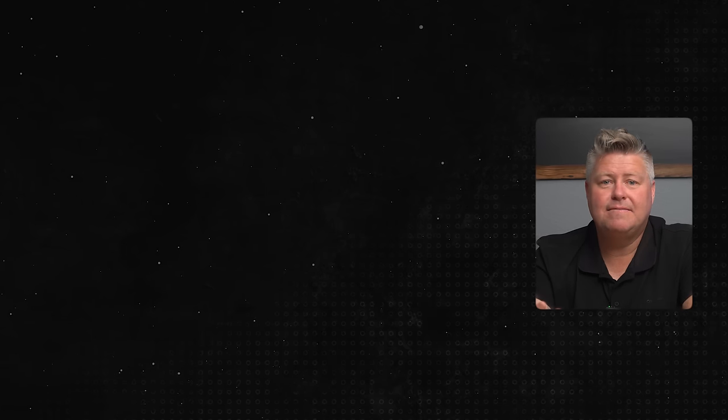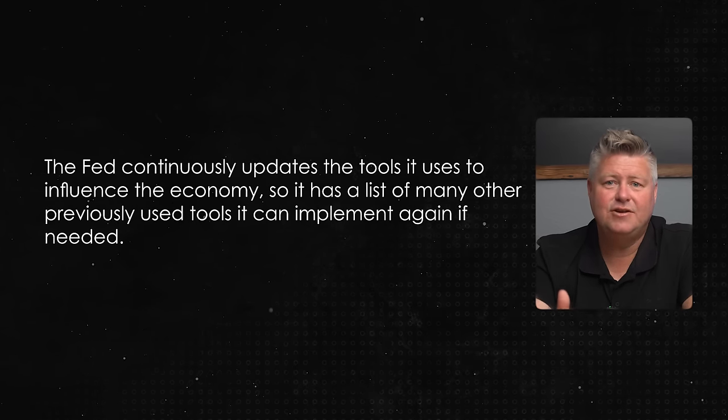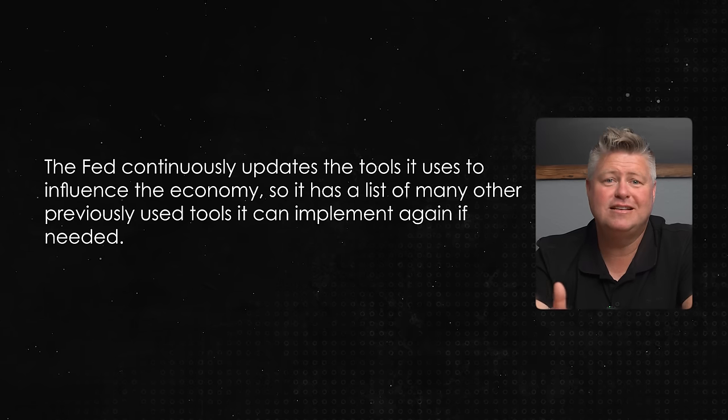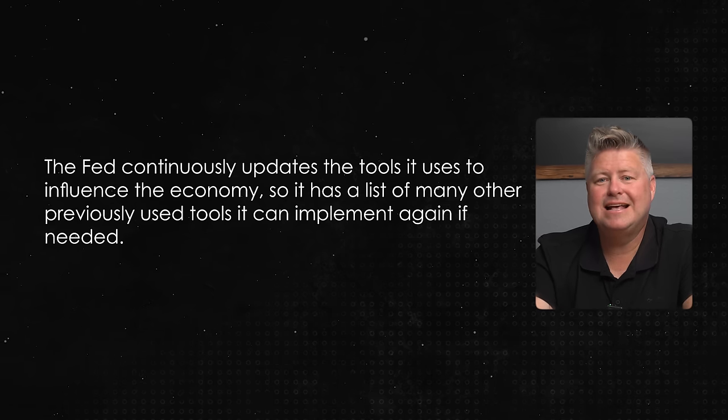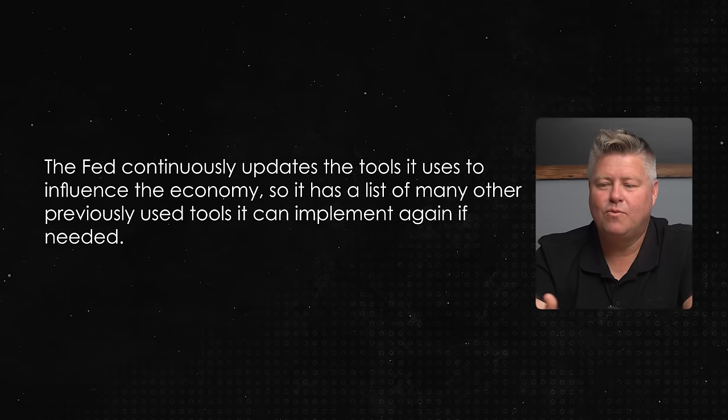Now let's talk about the elephant in the room. The Fed continuously updates the tools it uses to influence the economy, so it has a list of many other previously used tools that it can implement again if needed. The Fed is always doing what people call pulling a rabbit out of a hat. But it's really not a new thing, because central banks have been around for centuries and they've done all kinds of manipulative tricks to fool an economy into thinking it's doing great, and to build an economy up when it's not. It's really important that people understand this.